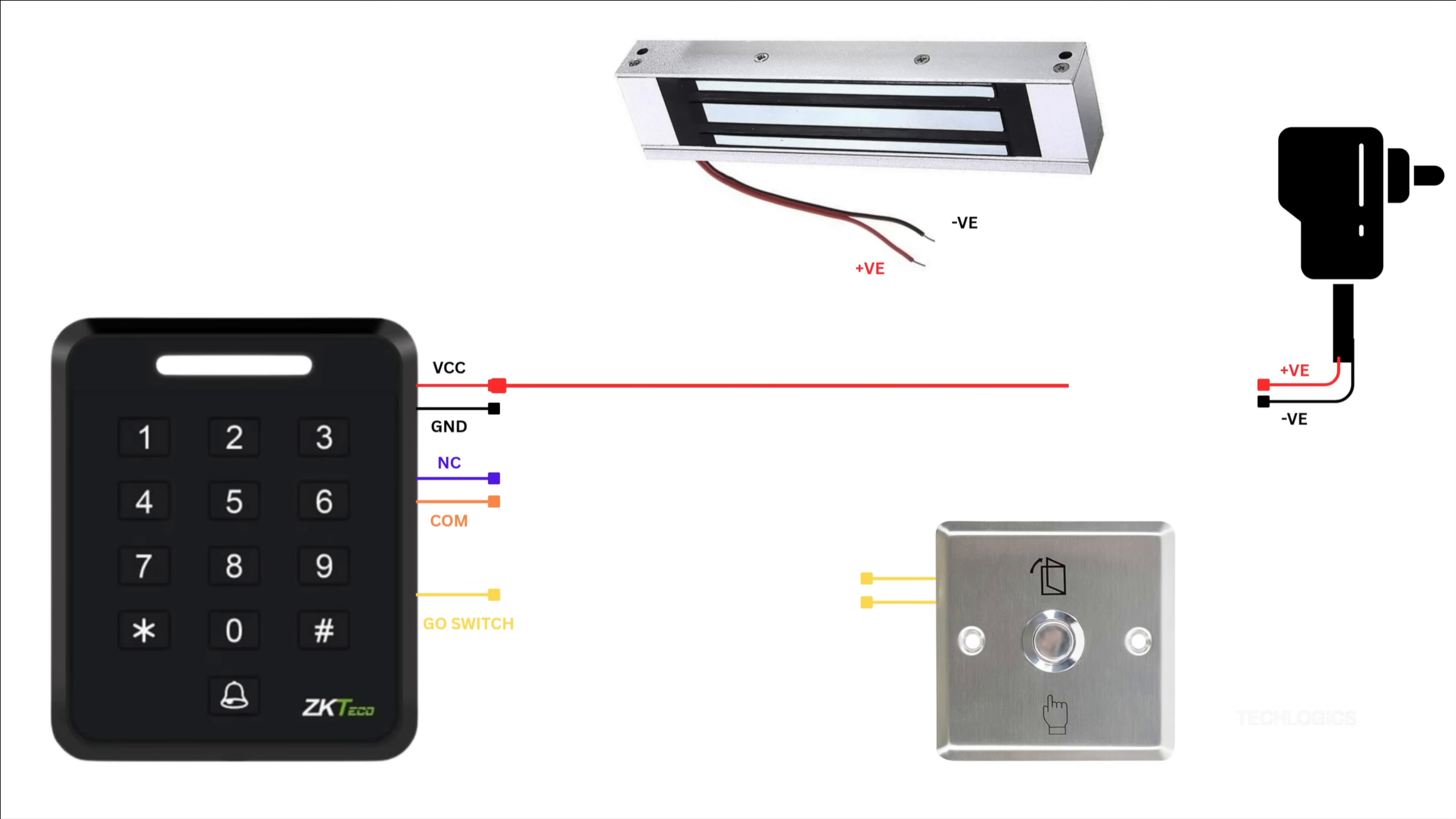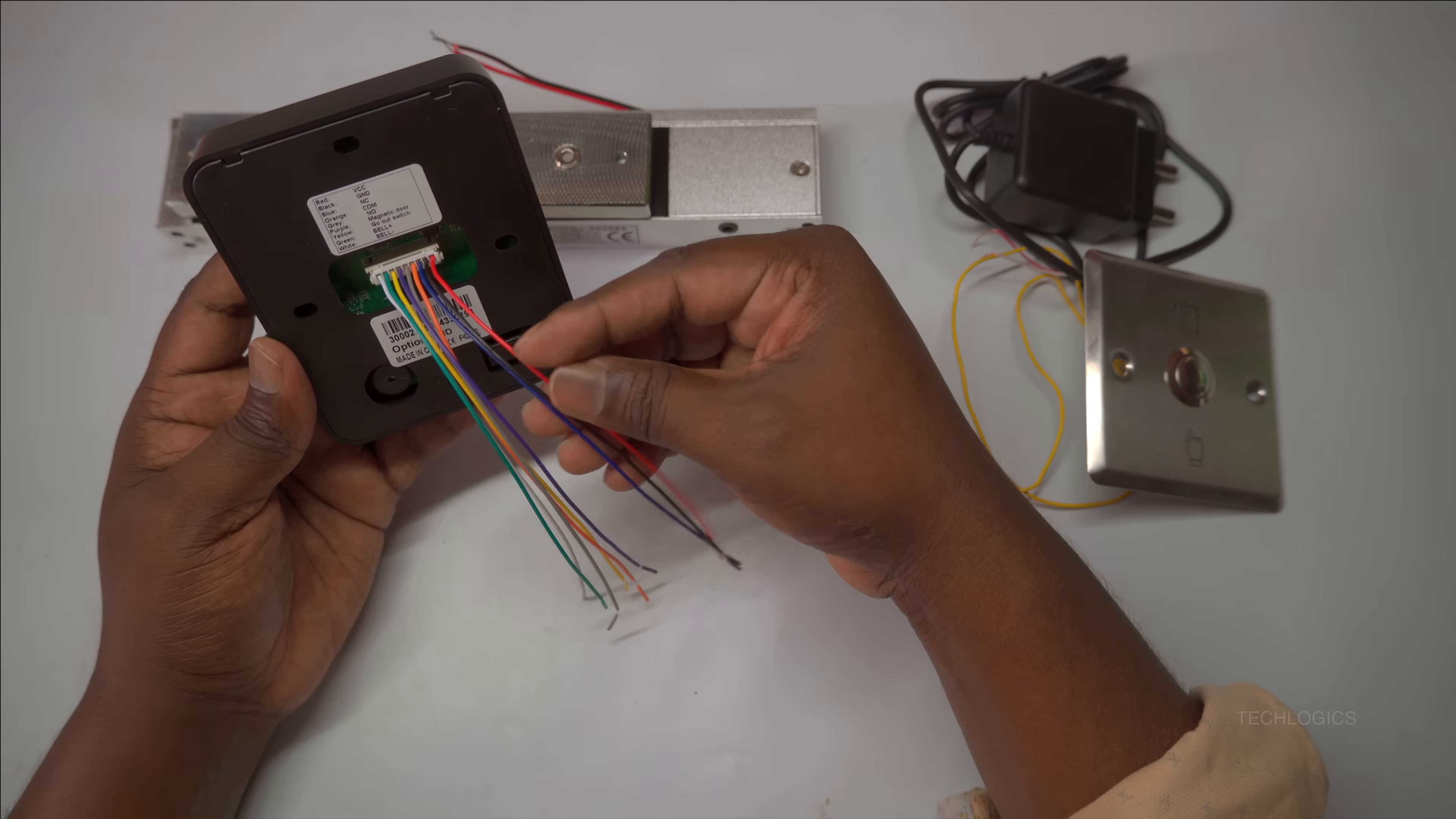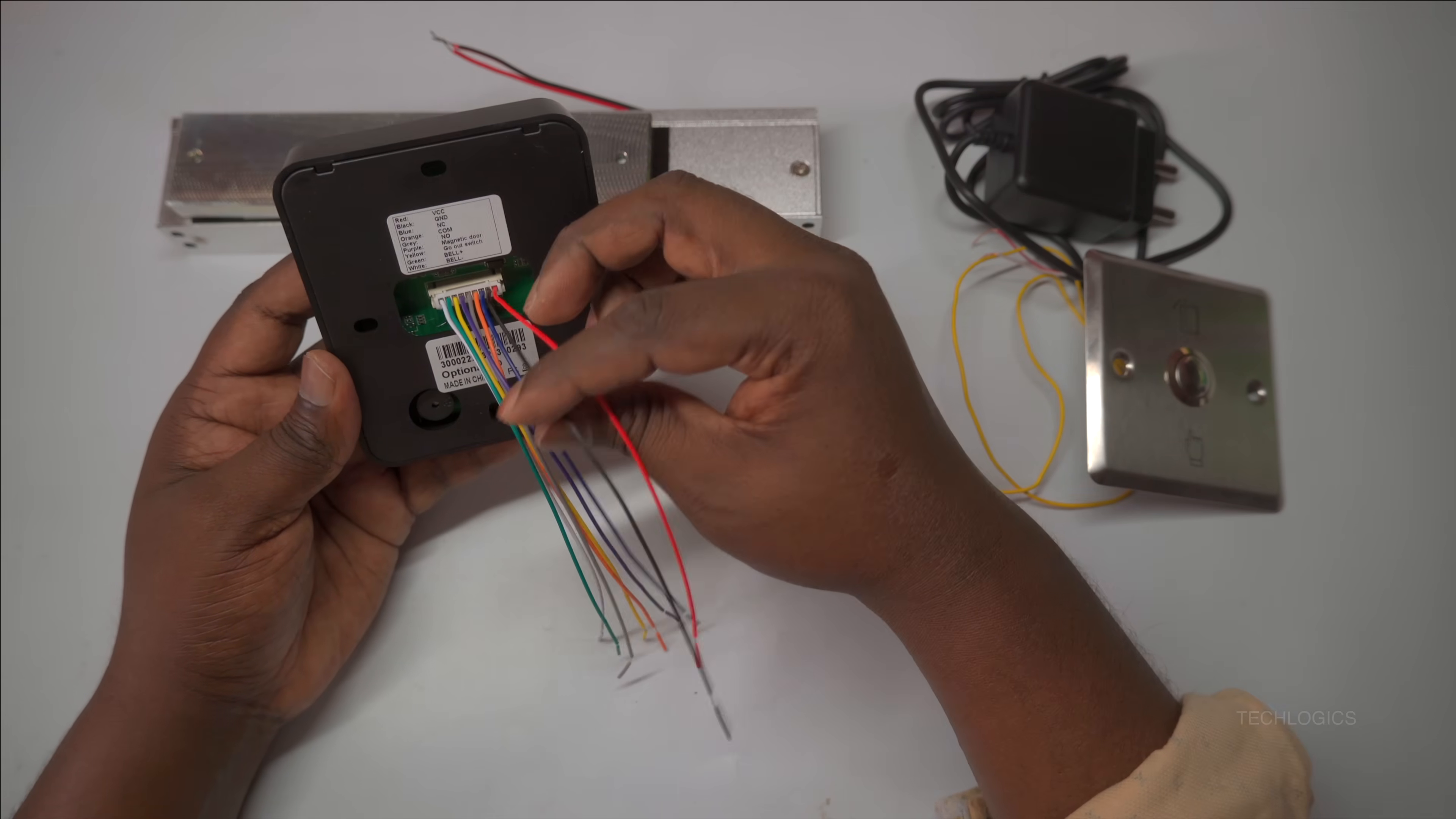According to the diagram, start by connecting the positive wire from the DC power adapter to the positive terminal of the controller, which is the NCC pin. This connection provides the necessary voltage for the controller to operate properly. Ensuring this correct wiring is essential for the system's stability and reliable functioning.